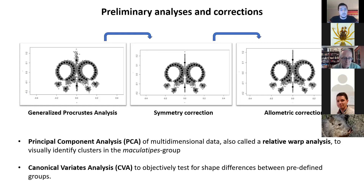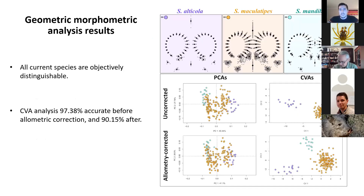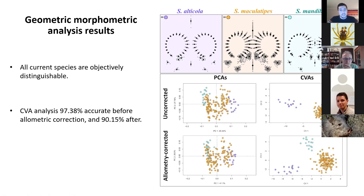We performed principal component analysis to look at whether our groups clustered in morphospace, and a canonical variate analysis to assess whether groups were objectively identifiable. Looking first at the currently described species, the PCAs showed each species as a relatively distinct cluster both before and after the allometric correction. The CVA analysis confirmed that the current species were objectively identifiable based on shape data at a relatively high rate.